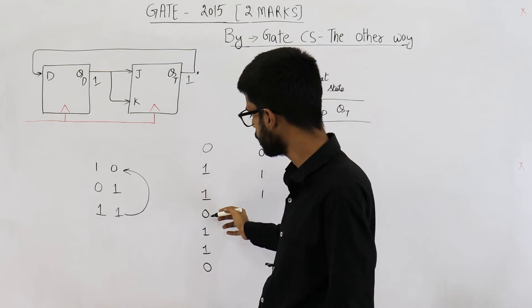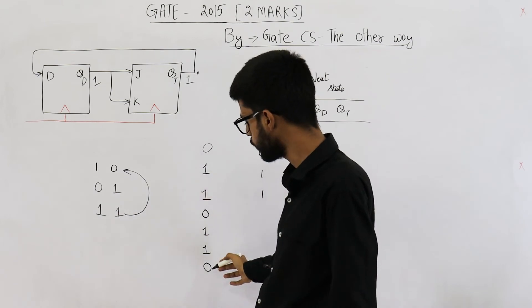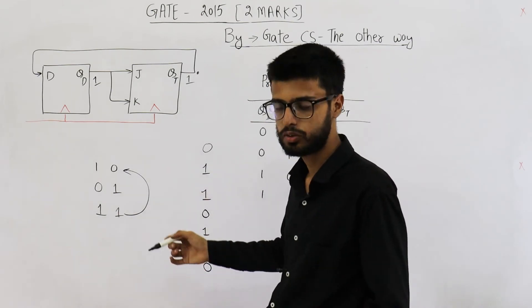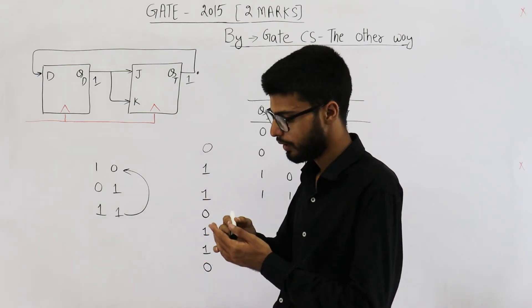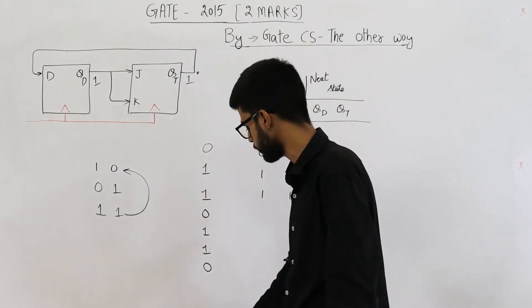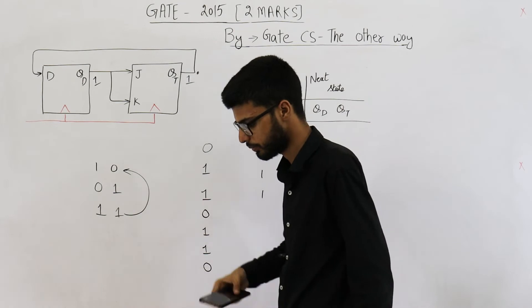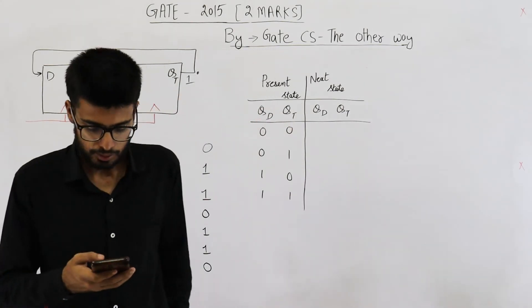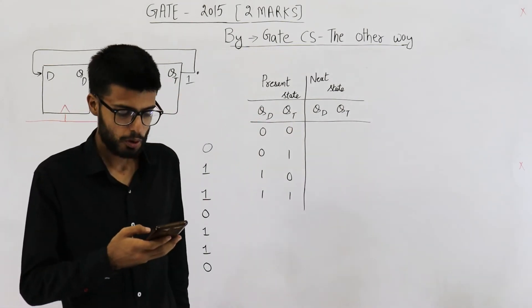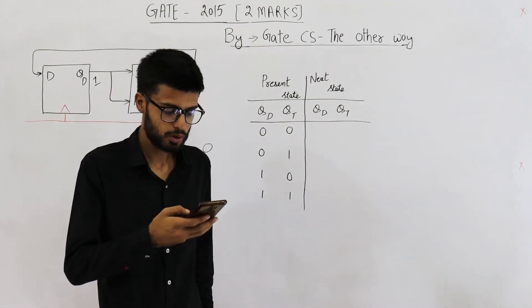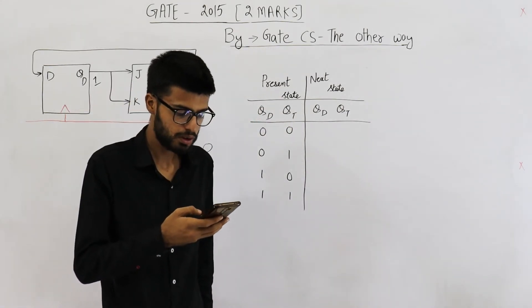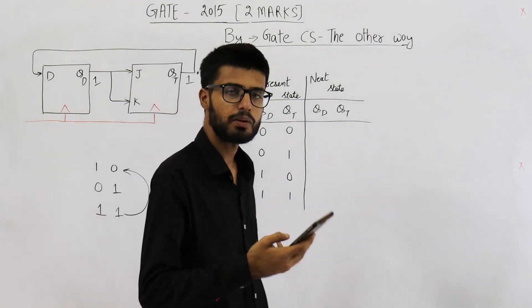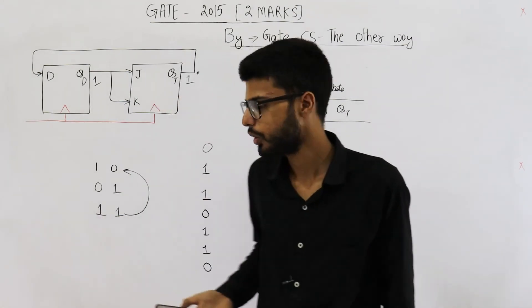They were asking what is the output sequence of the JK flip-flop. The initial value is 0, then 1, then 1, then back to 0, then 1, 1, 0 repeating. Looking at the options, it is option A: 0, 1, 1, 0, 1, 1, 0, 1, 1, 0 and so on.